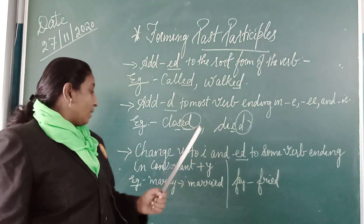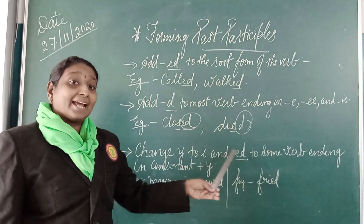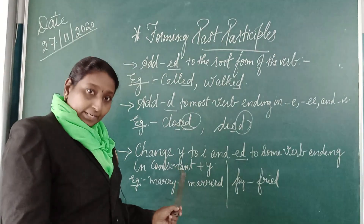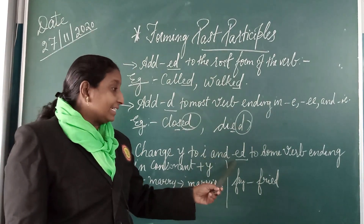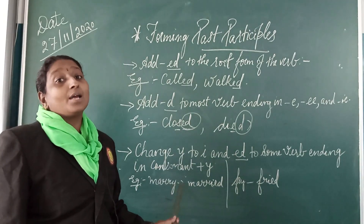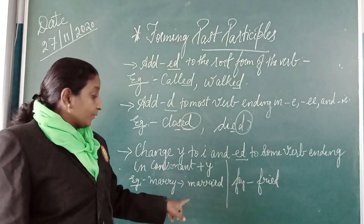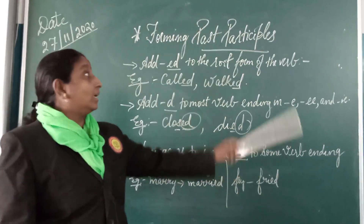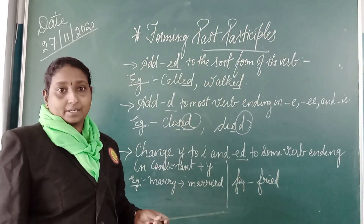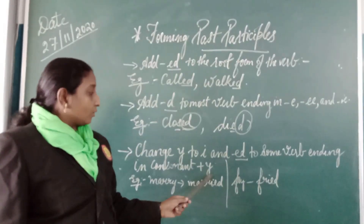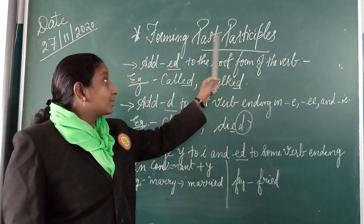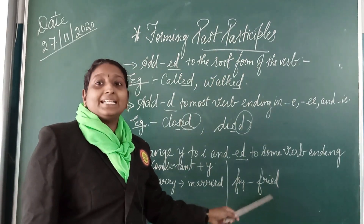The next rule: change Y to I-E-D. If a verb ends with Y, add I, E, D to form the past participle. For example, 'marry' is M-A-R-R-Y — you change Y and add I-E-D. Similarly, if the consonant before ends with Y, also use I-E-D. For example, the word 'fry' — its past participle is F-R-I-E-D, 'fried.'